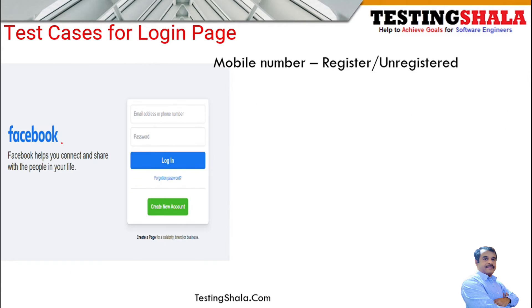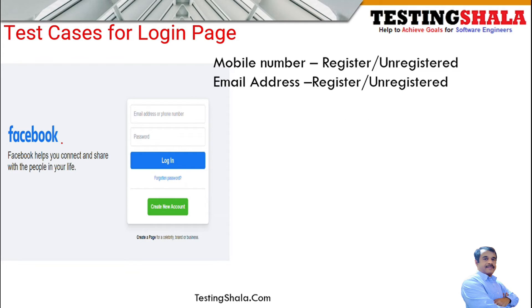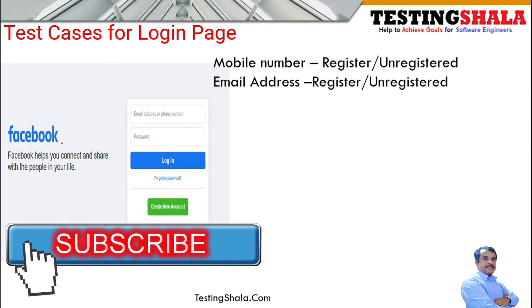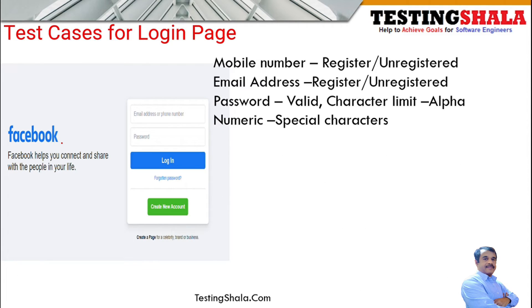Once you've created a Facebook account, the next step is to log in with your credentials — your username, email address, or phone number along with your password. You should validate by entering both registered and unregistered mobile numbers. If you give an invalid address along with the right password, you should get an error message; unregistered mobile numbers or unregistered email addresses should not be accepted for login.